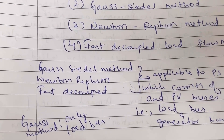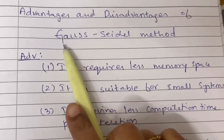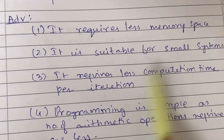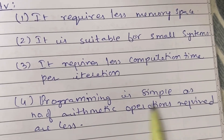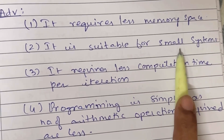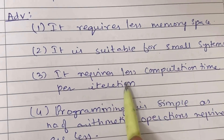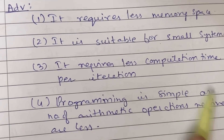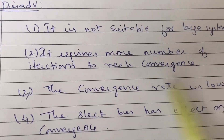Advantages of Gauss Seidel method: it requires less memory space, it is suitable for small systems, it requires less computation time per iteration, and programming is simple as the number of arithmetic operations required are less. Less memory space means it is suitable for small systems, and with less memory and small system size, computation time per iteration is also less.